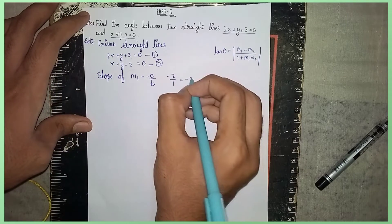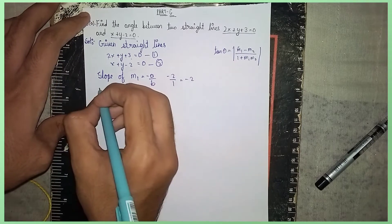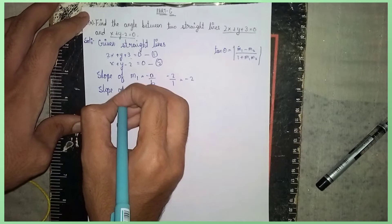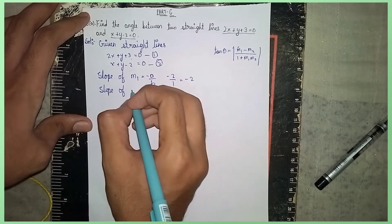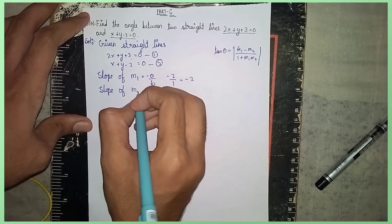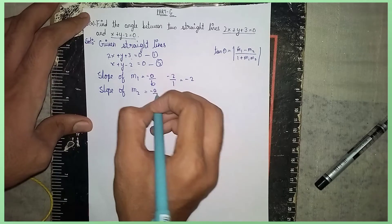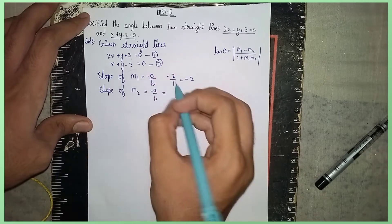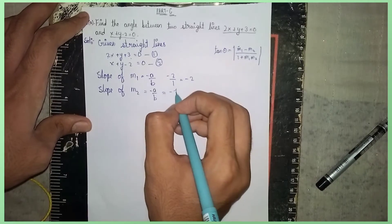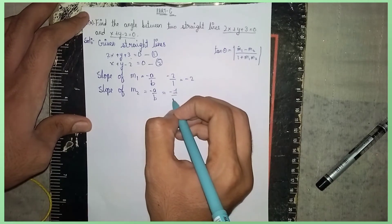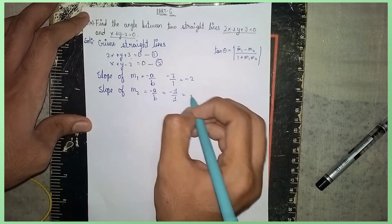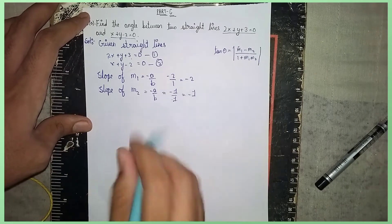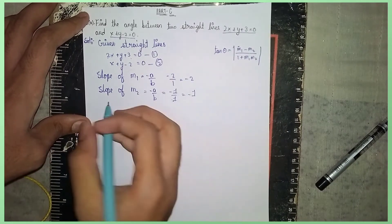Next, the slope of m2 using the same formula: m2 equals minus a by b. For equation two, a is 1 and b is 1, so m2 equals minus 1 by 1, which gives m2 equals minus 1.